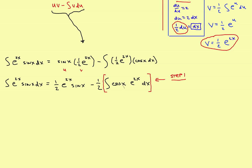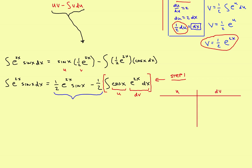For the second step of integration by parts, I'll let u be the trig part again — this time u equals the cosine of x — and dv equals e to the 2x dx. So I set up a second pair of columns in exactly the same way as before.